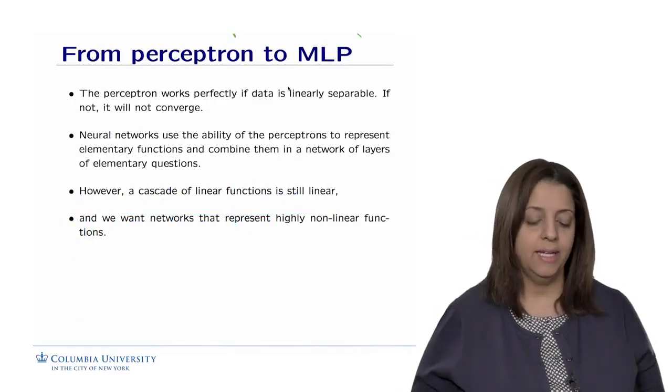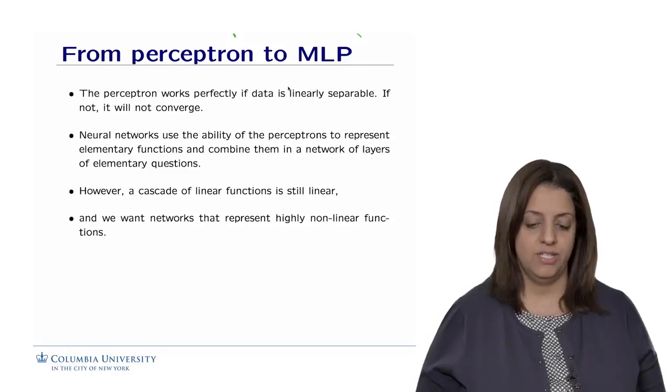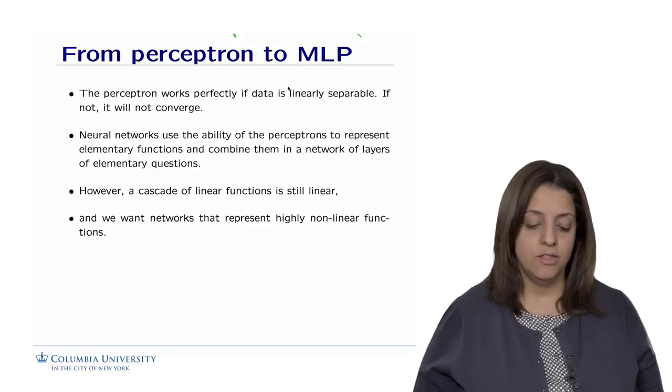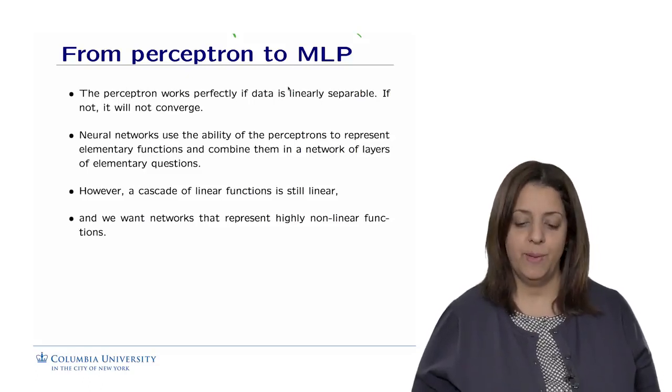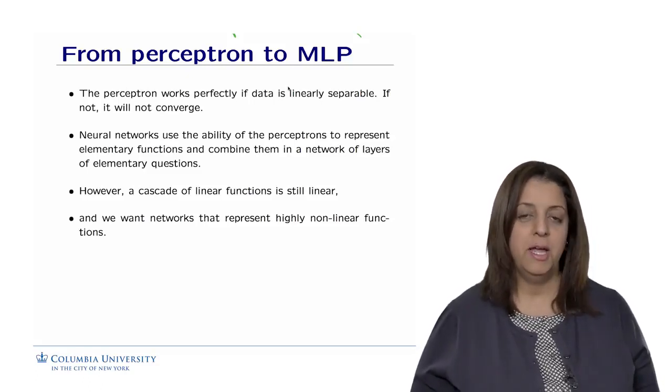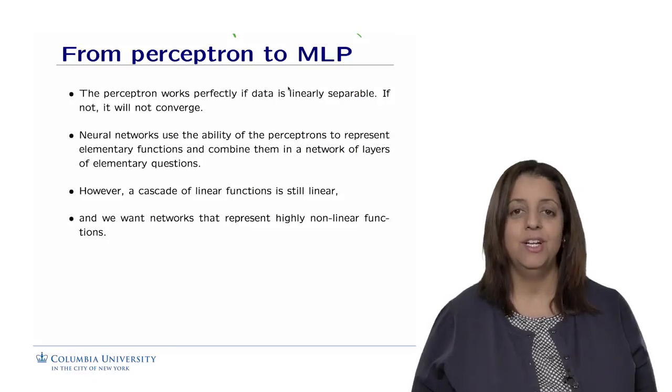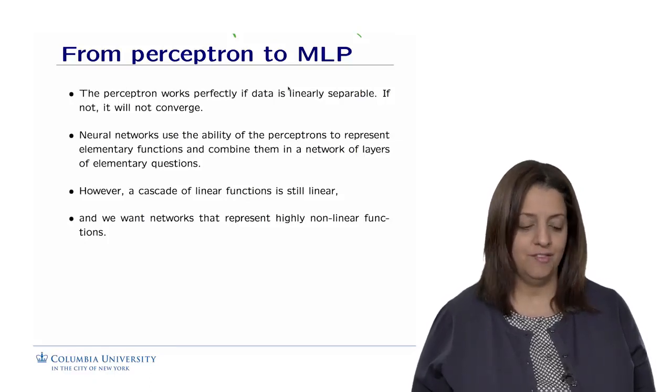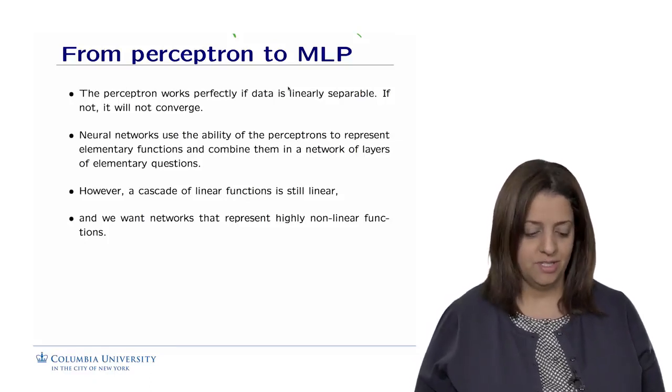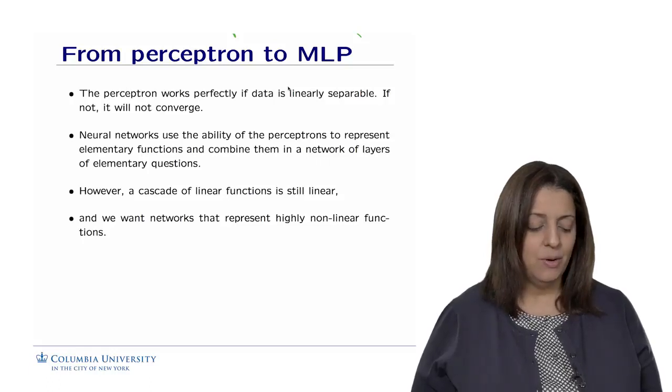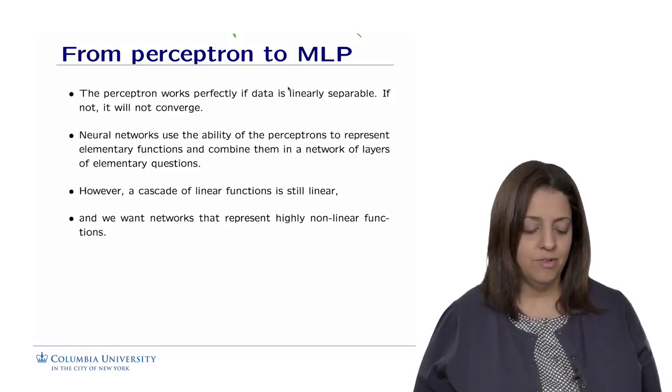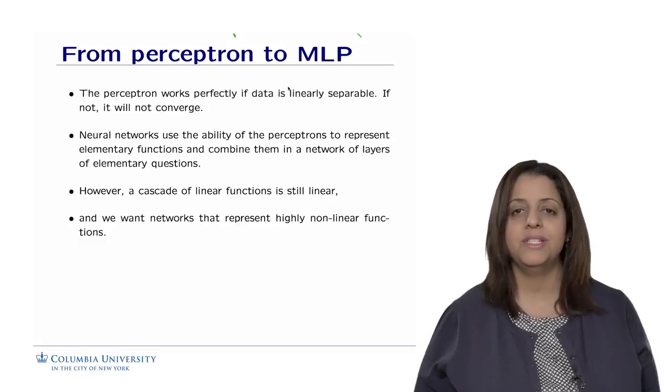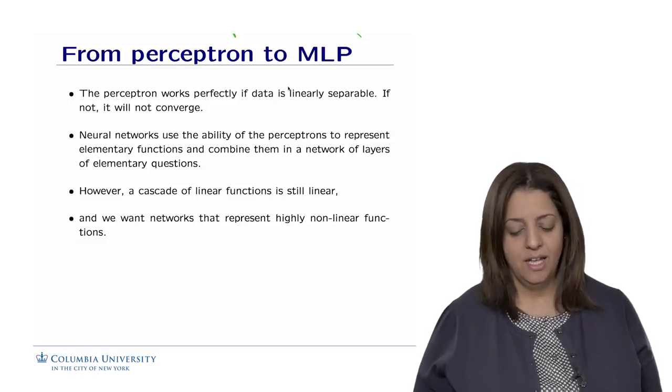So the perceptron can be extended to what we call a multi-layer perceptron, in which the multi-layer perceptron will exploit the ability of the perceptrons to represent simple functions. But then we're going to combine them together to make a more complicated network of different layers of those elementary perceptrons. However, if we take a cascade of linear functions, the result is still linear. And we want to be able to actually represent highly nonlinear functions.